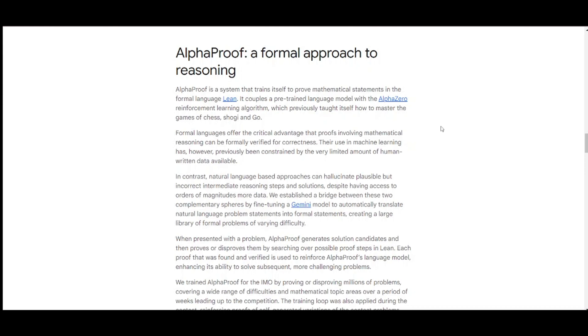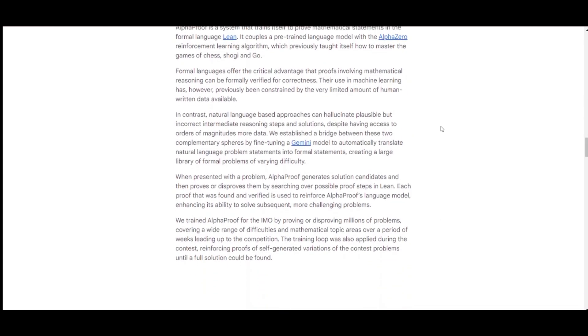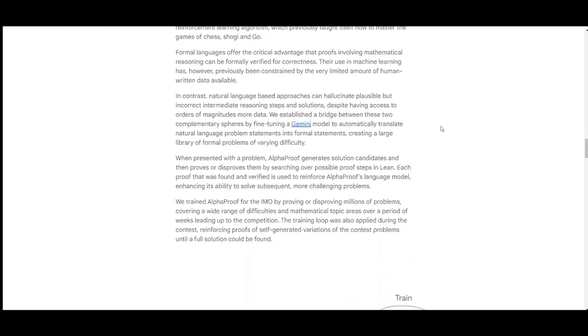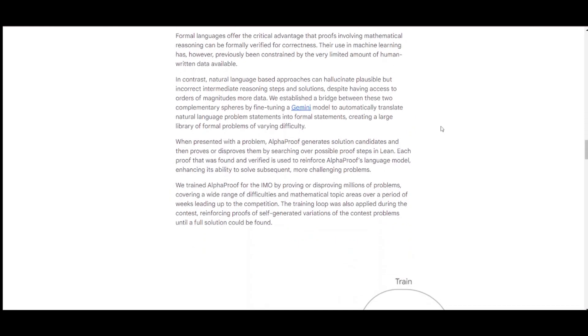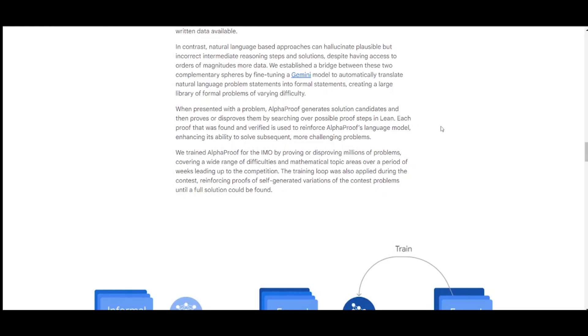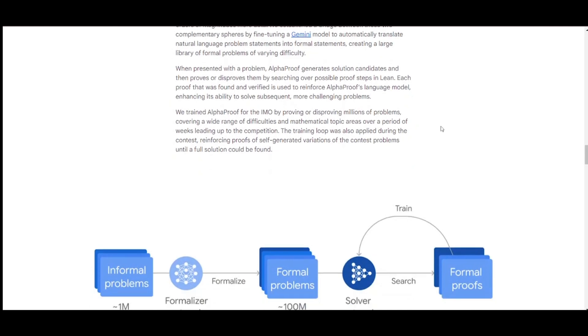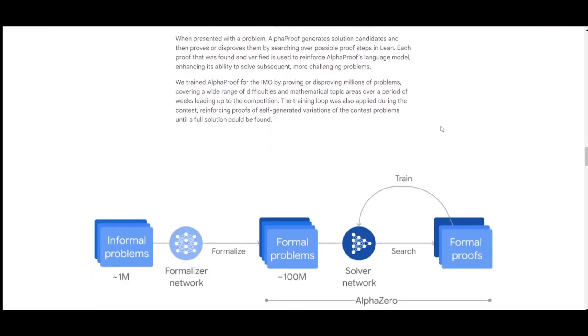AlphaProof couples a pre-trained language model with the AlphaZero reinforcement learning algorithm, which previously taught itself how to master the games of chess, shogi, and Go. When presented with a problem, AlphaProof generates solution candidates and then proves or disproves them by searching over possible proof steps in Lean. Each proof that was found and verified is used to reinforce AlphaProof's language model, enhancing its ability to solve subsequent, more challenging problems.